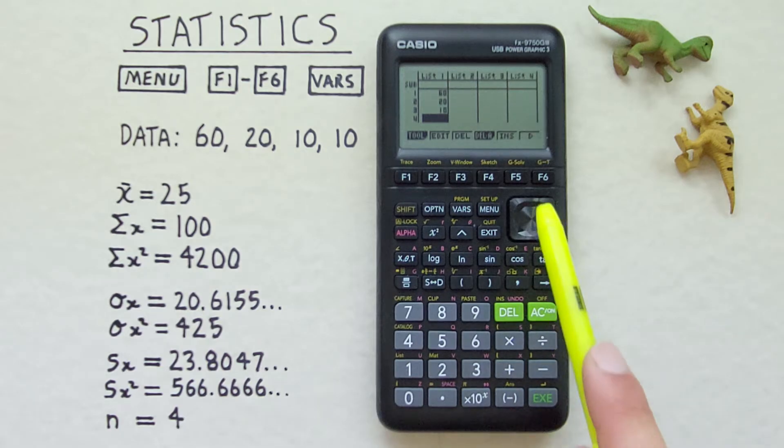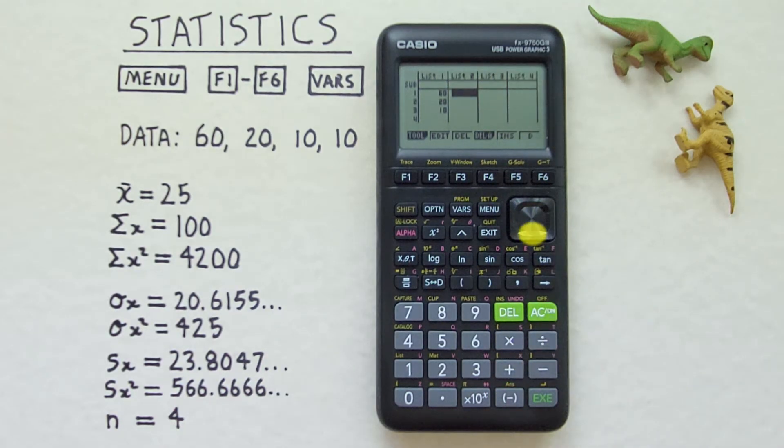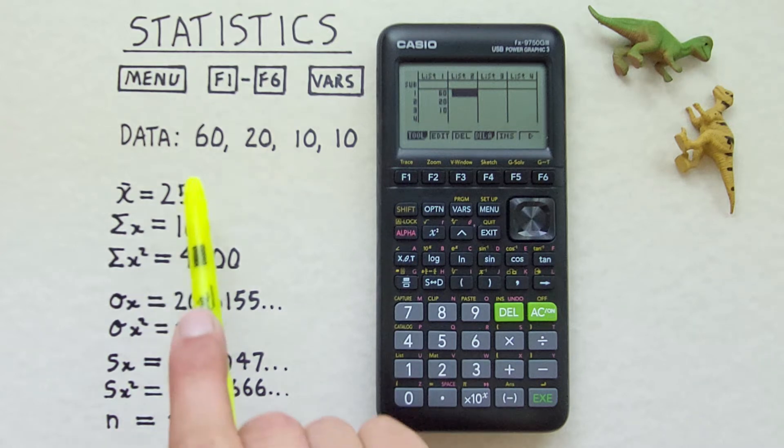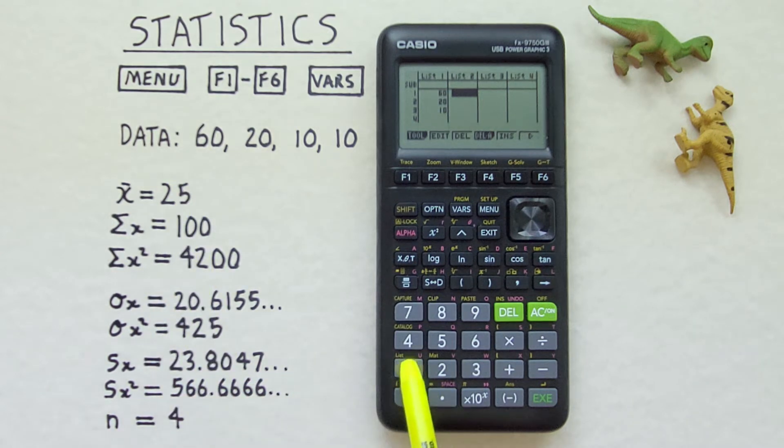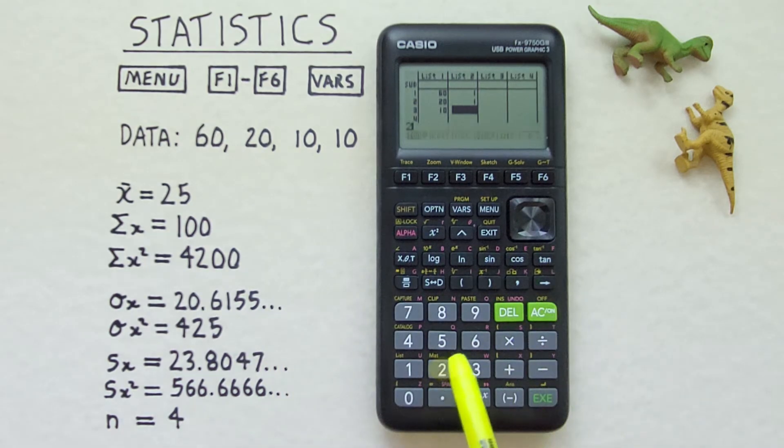Now we need to enter our frequency table. So we want to scroll over to list 2. And now we want to tell our calculator how many times each number occurs. Well we have 60 once so we put 1 there. We have 20 once so we press 1 there. And we have 10 two times so we'll press 2 there.